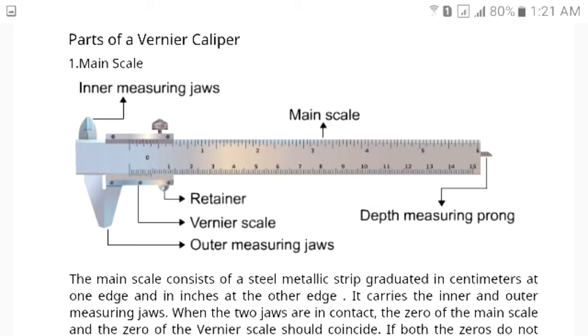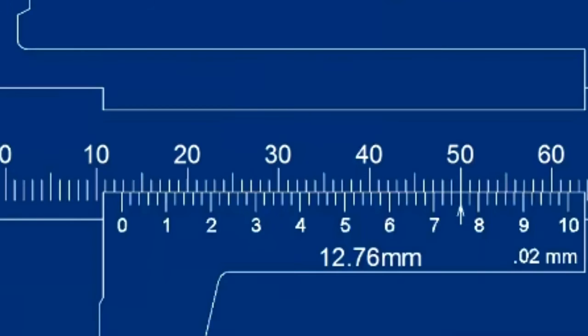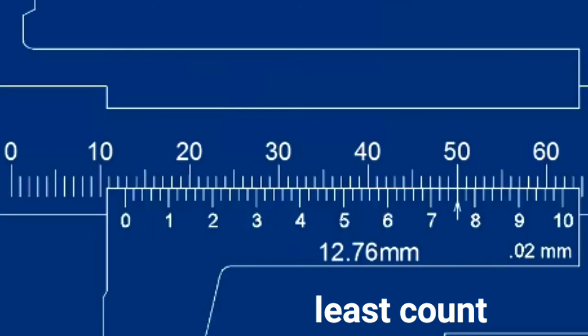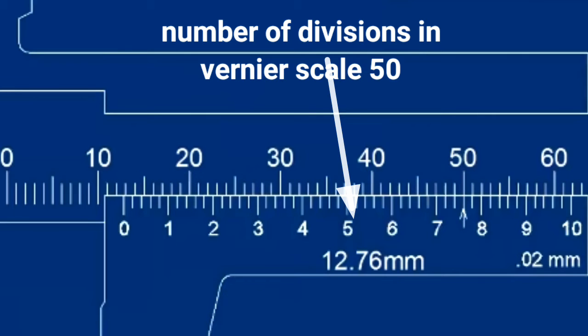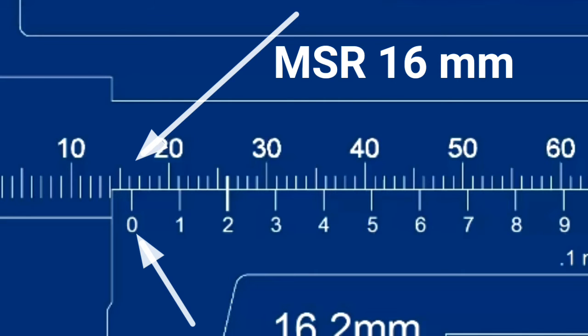Now how to take measurement using vernier caliper. For measuring an object, first the object is placed in between the measuring surfaces. Then note the main scale reading or MSR. After that check the vernier scale reading. The total reading is main scale reading plus vernier scale reading.